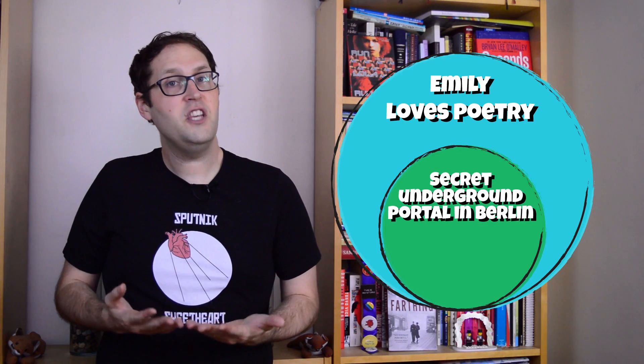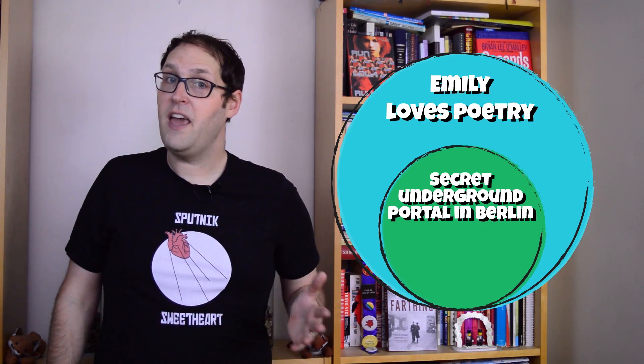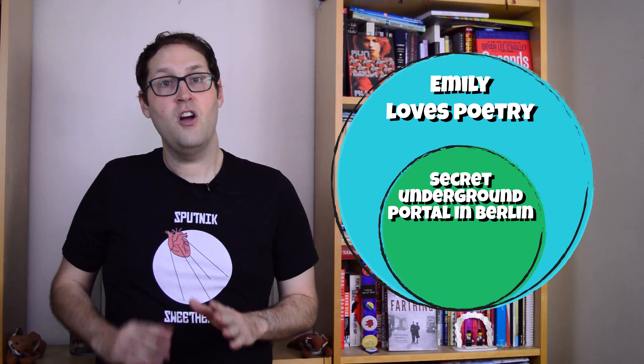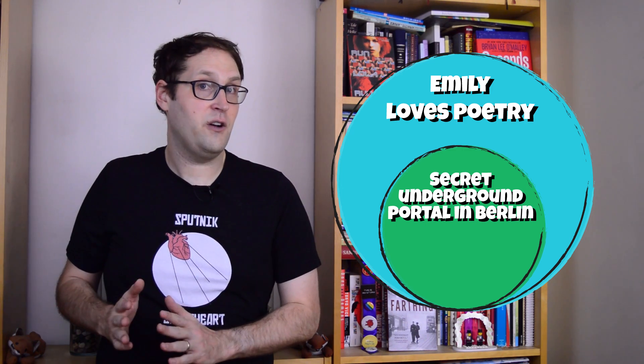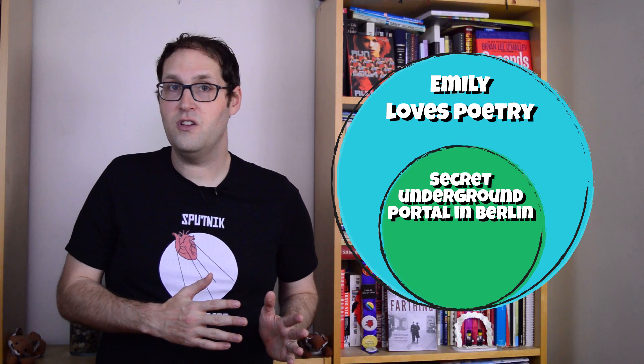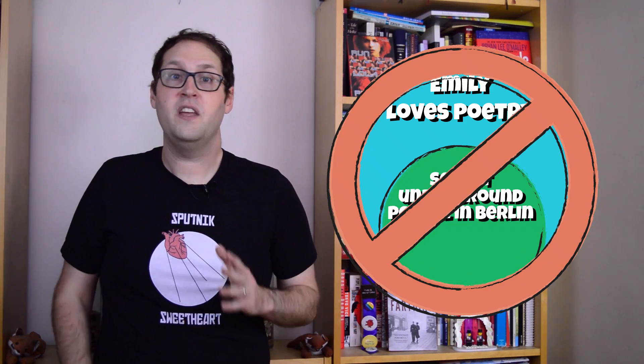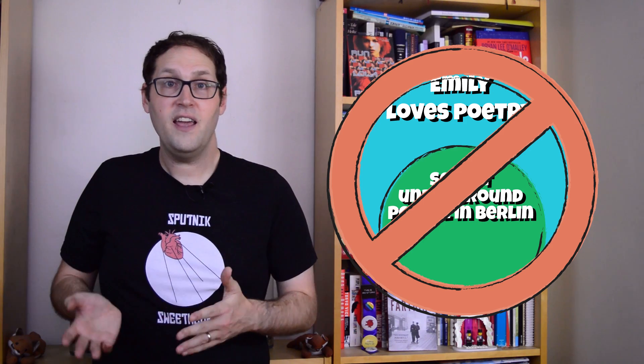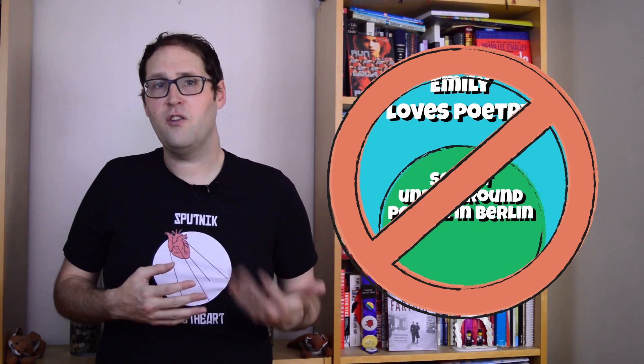If we apply this template to conditionals, a sentence like, "if there's a secret underground portal in Berlin, then Emily absolutely loves poetry," basically claims that all secret German portal scenarios are also Emily-loving-poetry scenarios. And that statement seems plainly false, because we can easily imagine cases where she loves poetry and cases where she hates it, independent of what's going on beneath the ground. There shouldn't be a connection, and in our more sophisticated theory, there isn't one. So we get what we need — a theory that still covers the simpler cases, like how to pass a history test, but excludes the problematic ones that our first hypothesis couldn't rule out.